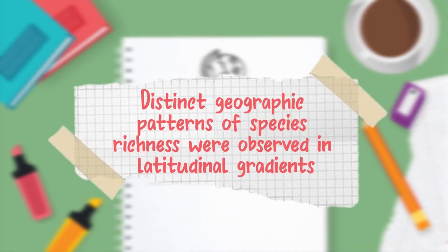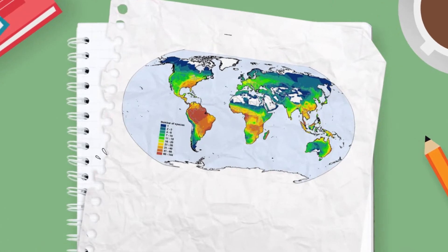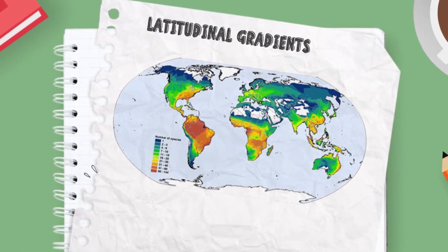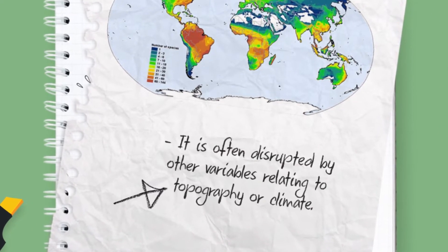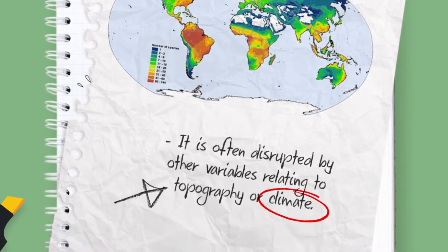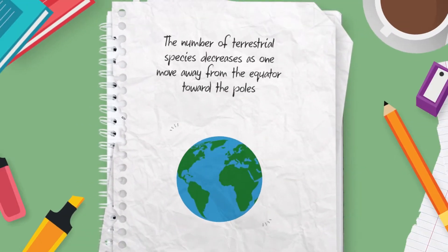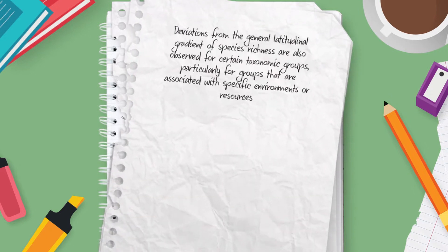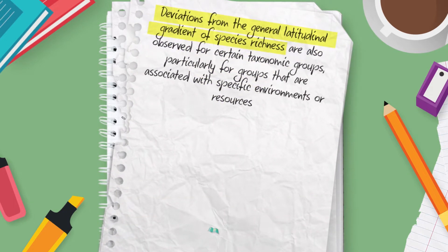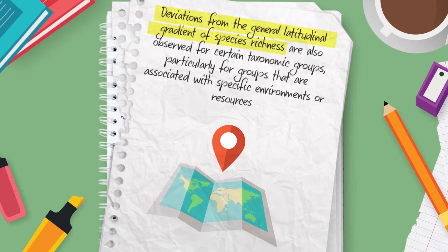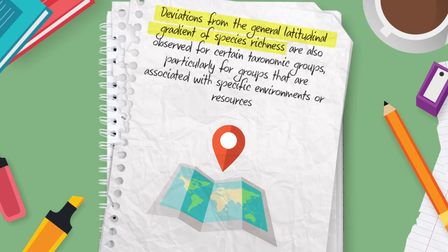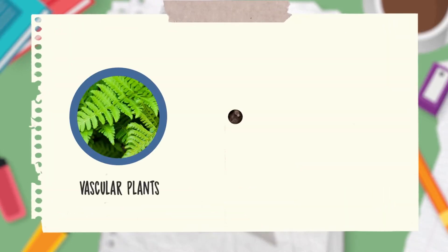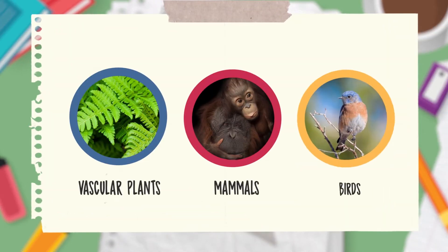Distinct geographic patterns of species richness are observed in latitudinal gradients, though often disrupted by other variables relating to topography or climate. The number of terrestrial species decreases as one moves away from the equator toward the poles. Deviations from this general latitudinal gradient are also observed for certain taxonomic groups, particularly those associated with specific environments such as vascular plants, mammals, birds, and species of the New World.